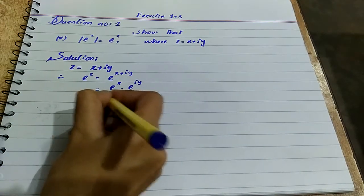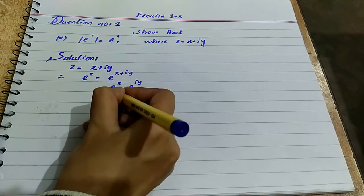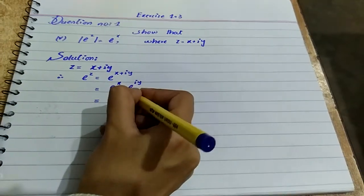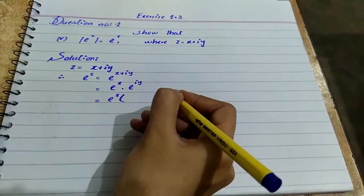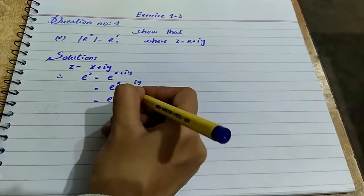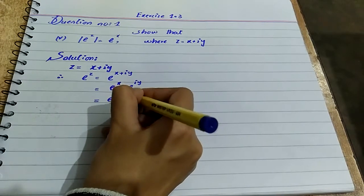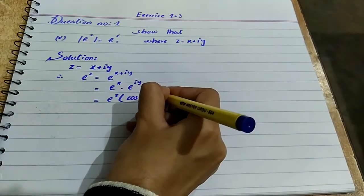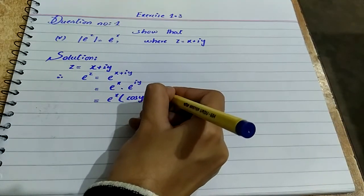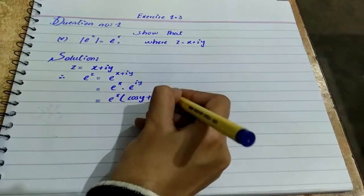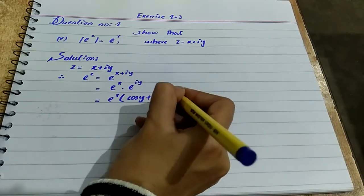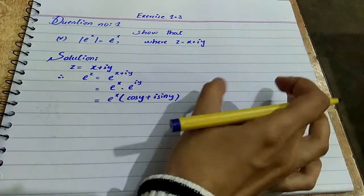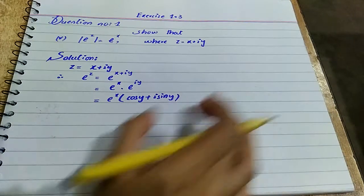e raised to x remains as it is, and e raised to iy — by Euler's theorem — we write as cos y + i·sin y. We apply Euler's theorem here and mention it explicitly.